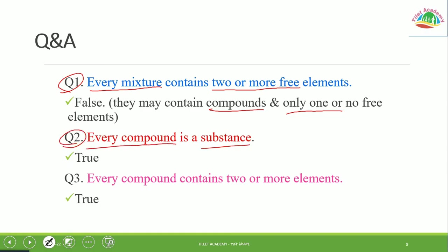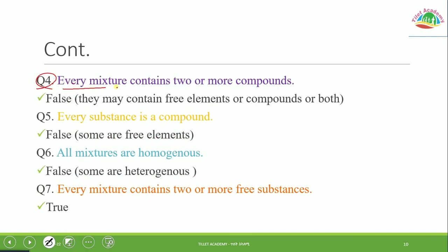Question 2: Is every compound a substance? Yes, that is TRUE. Question 3: Does every compound contain two or more elements? Yes, that is TRUE — a compound is formed when two or more elements react chemically. Question 4: Does every mixture contain two or more compounds? That is FALSE — similar to question 1, a mixture may contain elements as well. Question 5: Is every substance a compound? That is FALSE — a substance can be either an element or a compound.